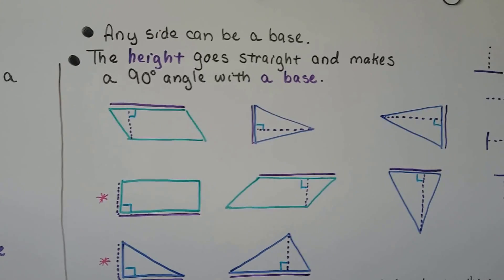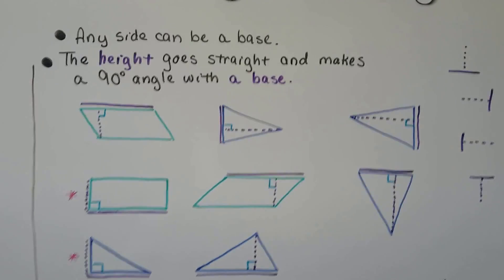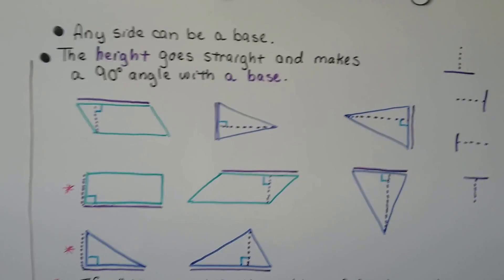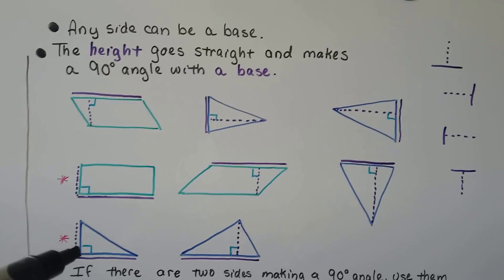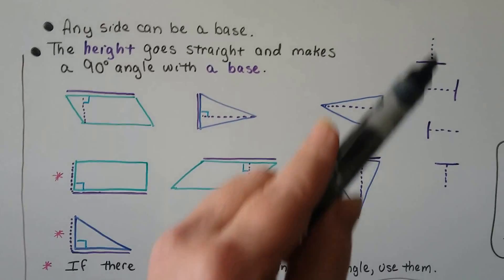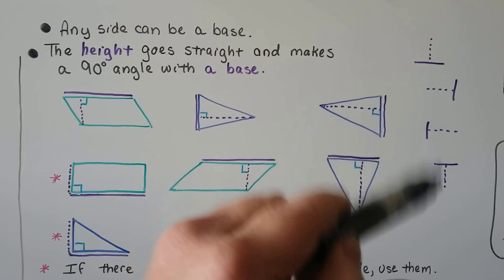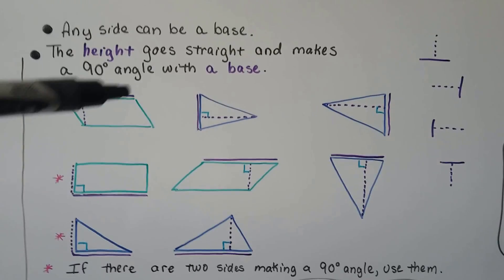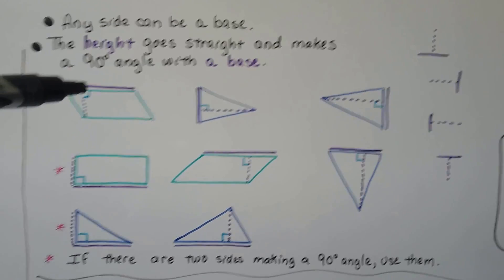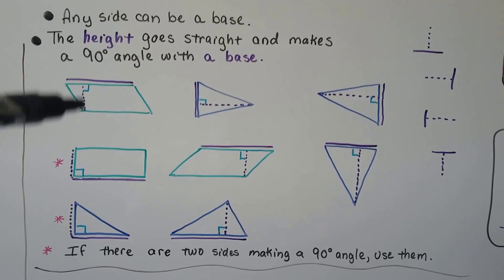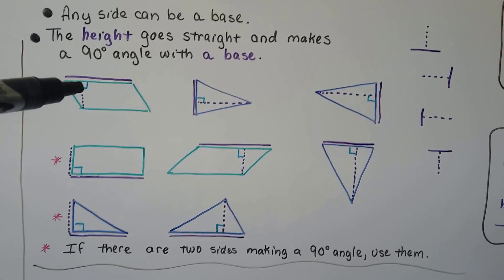Any side can be a base. The height goes straight and makes a 90 degree angle with the base. So we see our little 90 degree angle box. As long as it's T-shaped, perpendicular lines. Here the base would be at the top and then it's going down like this to make a 90 degree angle here. We could have it on this side going that way with the height.